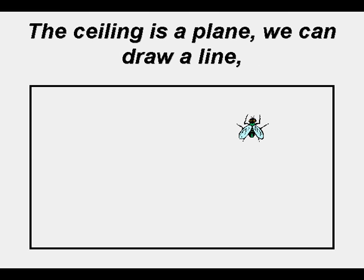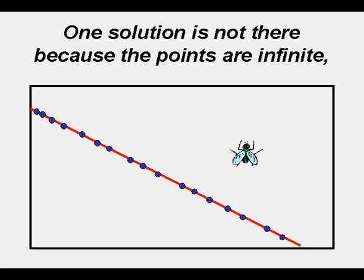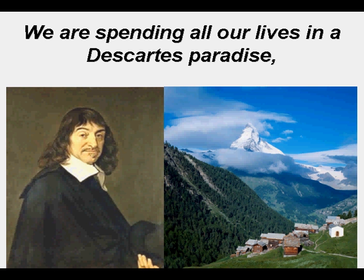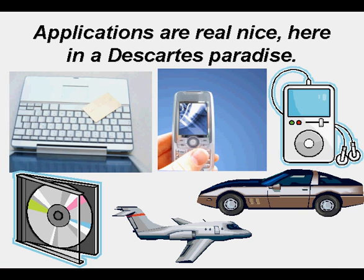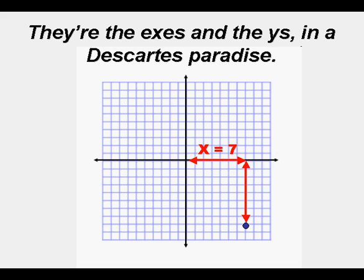The ceiling is a plane, we can draw a line. The line is a function; there are points all along. One solution is not there because the points are infinite. The plan is so simple that it became a hit. We are spending all our lives in a Descartes paradise. Applications are real nice here in a Descartes paradise. Coordinates are used twice in a Descartes paradise — they're the X's and the Y's in a Descartes paradise.